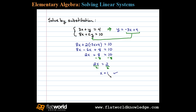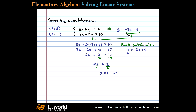Solutions to systems are ordered pairs, which look like (x, y). We've found x, so next we need to find the corresponding y value by back-substituting. We substitute x into the equivalent equation y equals negative 3x plus 4: negative 3 times 1 plus 4 gives negative 3 plus 4, so y equals 1. The solution to the system is the ordered pair (1, 1).